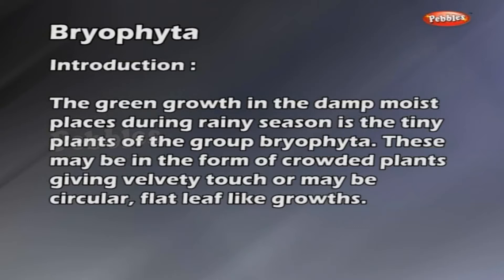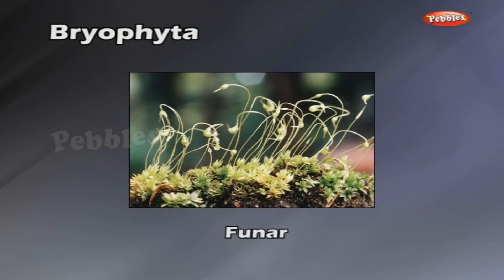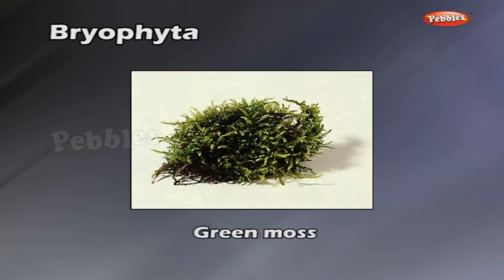The green growth in the damp, moist places during rainy season is the tiny plants of the group Bryophyta. These may be in the form of crowded plants giving a velvety touch, or may be circular, flat, leaf-like growths. Funaria is the main plant commonly found in the velvet-formed growth and is called green moss.